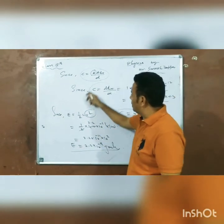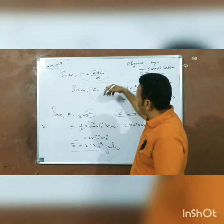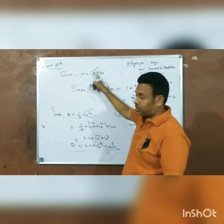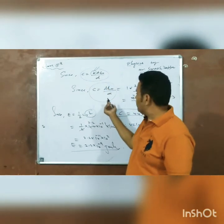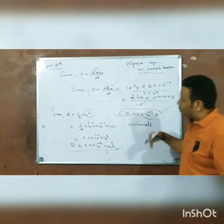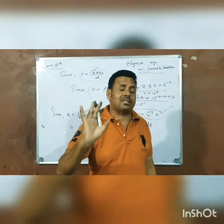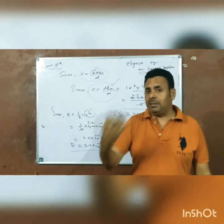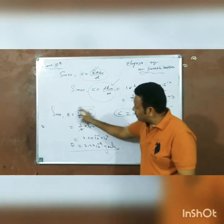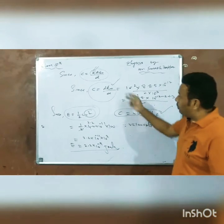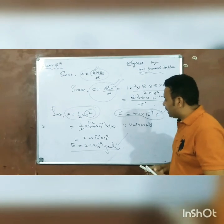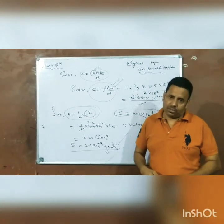This equals 2.2 times 10 to the power minus 9 Joules. So this is the energy stored in a capacitor.